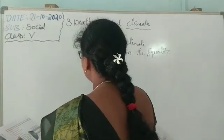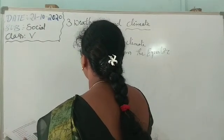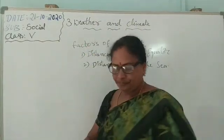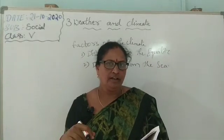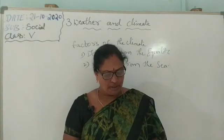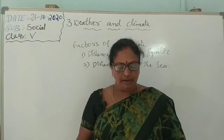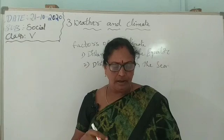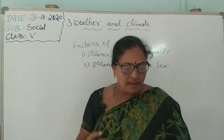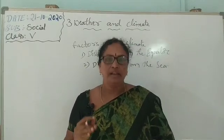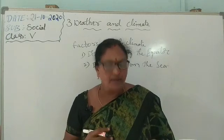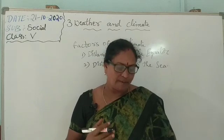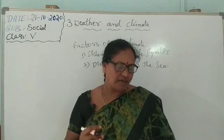The second factor is distance from the sea. Water bodies cool down and heat up slower than land, which affects the climate of places near the sea. These places have a moderate type of climate — they are neither too hot in summer nor very cold in winter. The places near the sea coast are influenced by the condition of the sea.